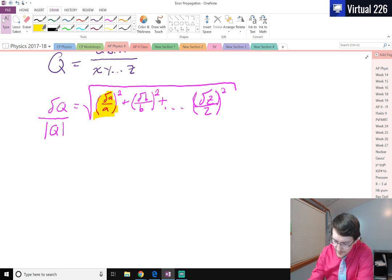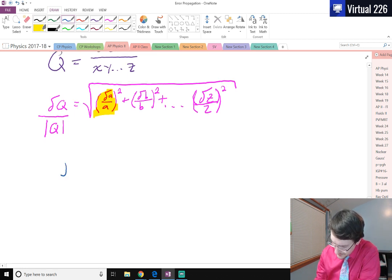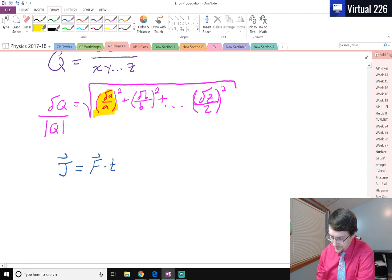A quick way we could see this is if we'd like to find an impulse of something. Last year we learned that impulse J is equal to a force multiplied by a time.